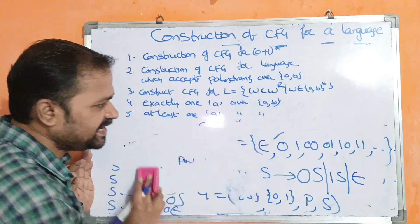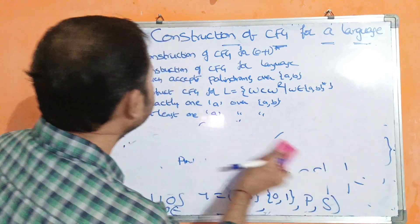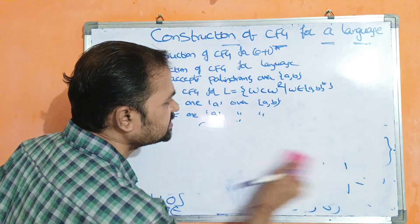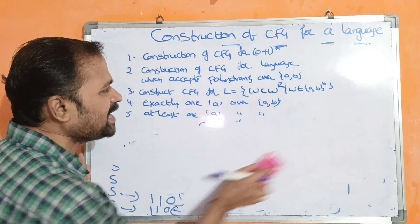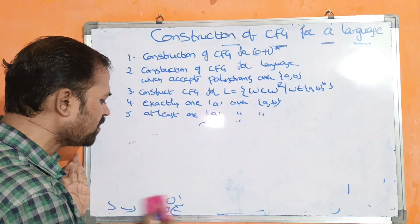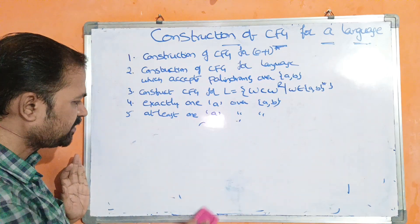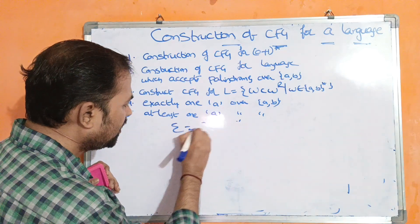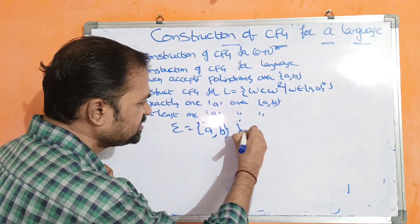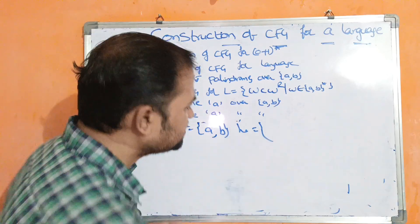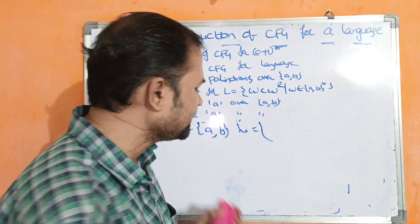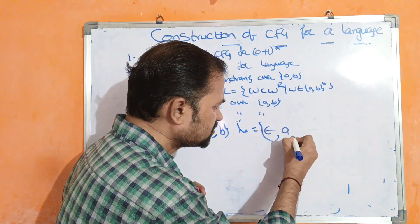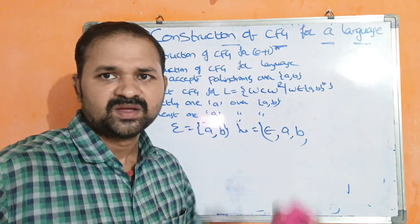Now the second example: construction of CFG for the language which accepts palindromes over {A, B}. The input alphabet contains two symbols: A and B. Any single character string is a palindrome — A is a palindrome, B is a palindrome, because the reverse of A is A and the reverse of B is B.